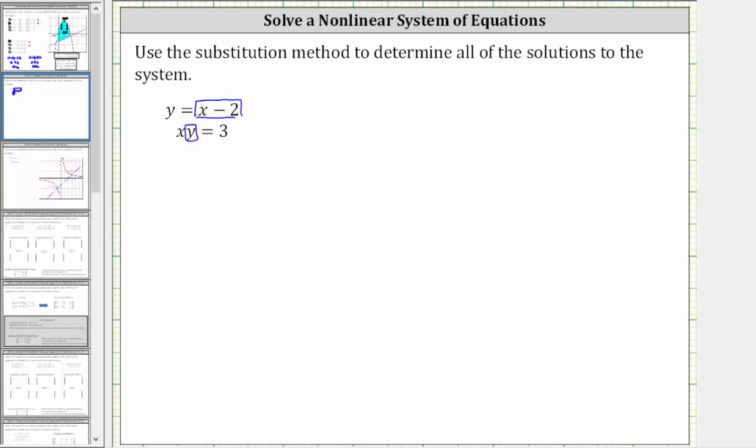This will give us one equation with one unknown that we can then solve for x. So performing the substitution, we have x times the quantity x minus two equals three.